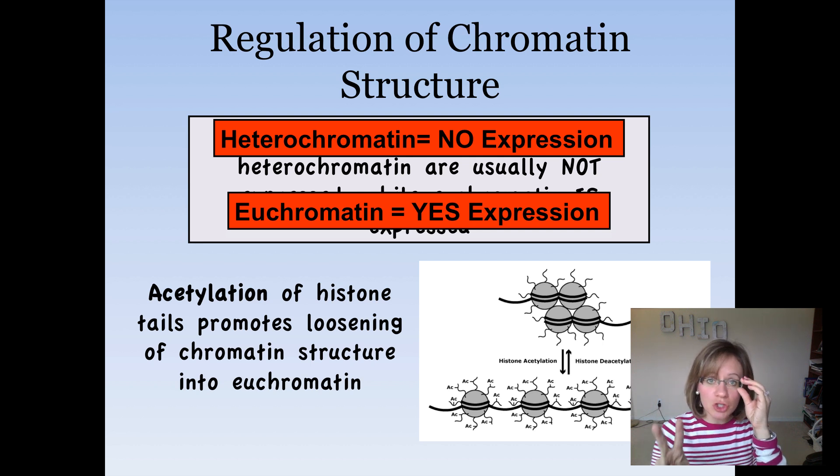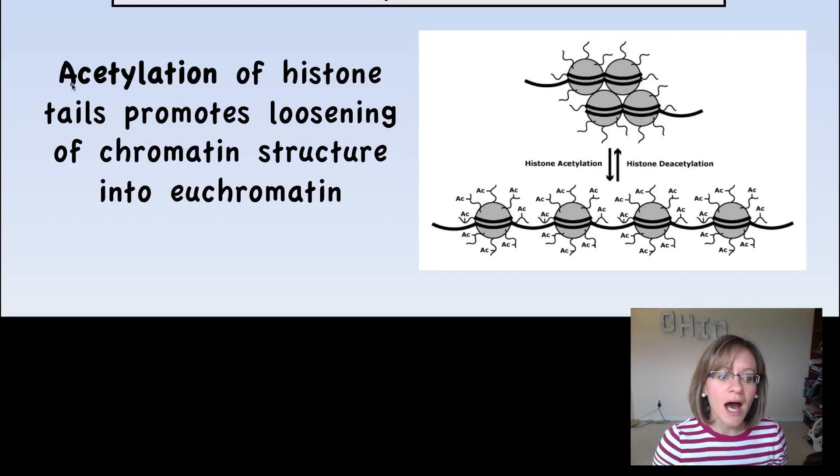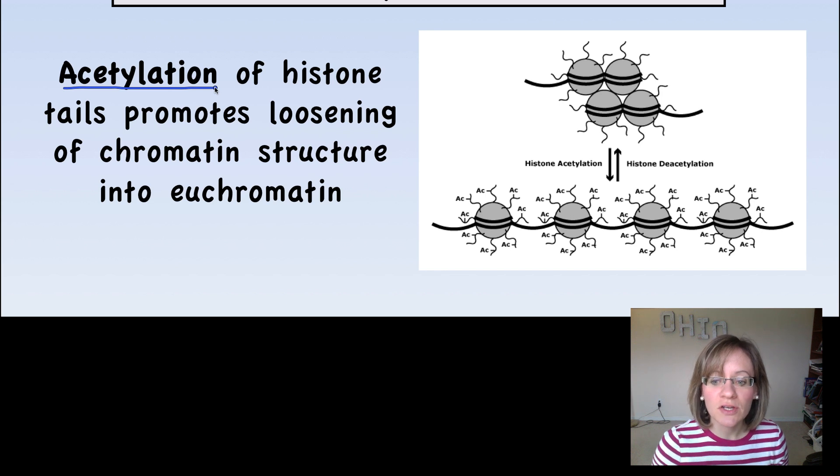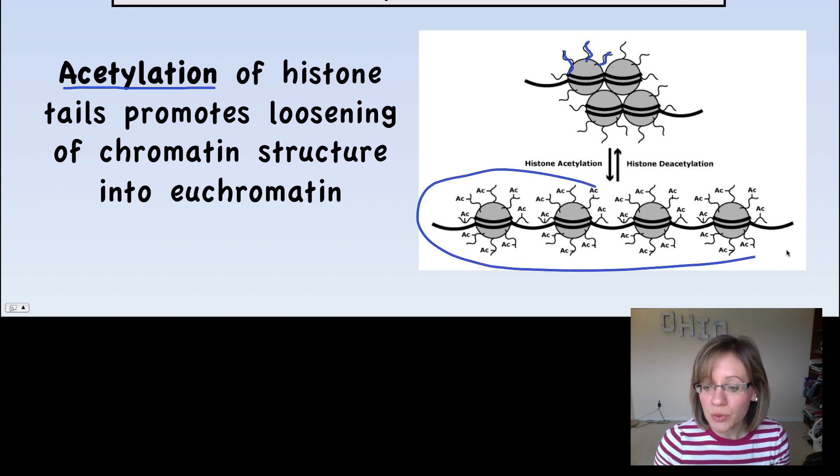Now there's two more ways we're going to discuss that you can regulate chromatin structure. The first way is called acetylation, acetylation of histones or histone acetylation. So histones actually have these little tails on them and the cell can add acetyl groups to these tails. And this somehow, through some mechanism, actually loosens chromatin structure and therefore it's going to increase transcription.